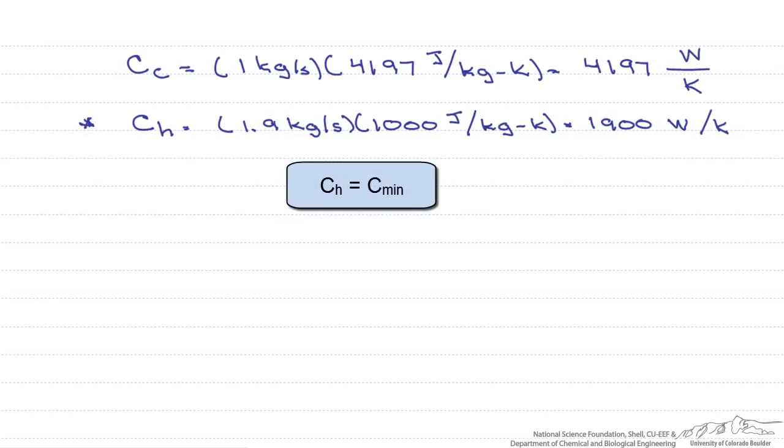So this is going to be our C min. Finally, we find our ratio of C min over C max, so our C sub r is 0.45.